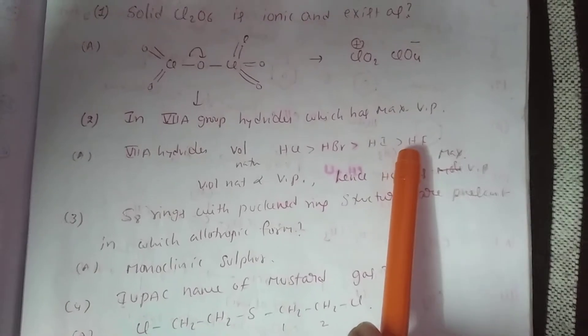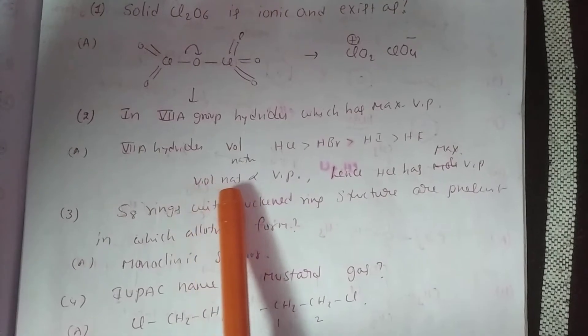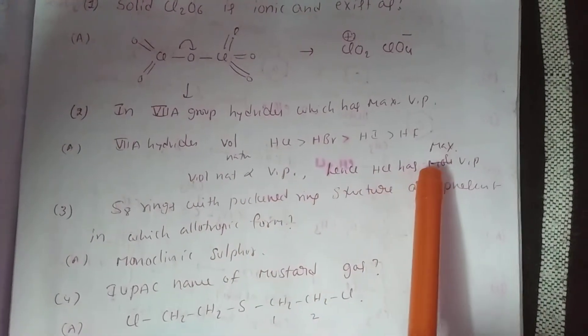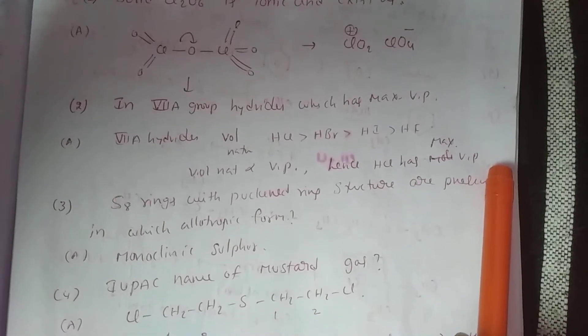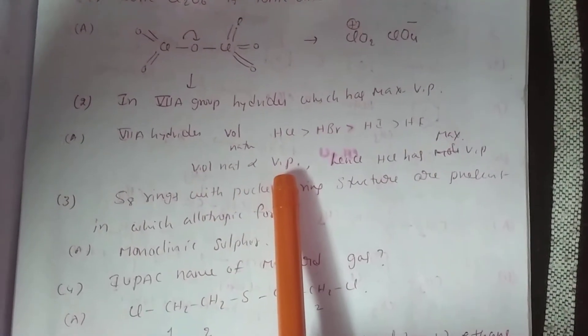Because HF has hydrogen bonding, it has less volatile nature. Volatile nature is directly proportional to vapor pressure. Hence HCl has maximum vapor pressure. HCl is more volatile, that means more vapor pressure.